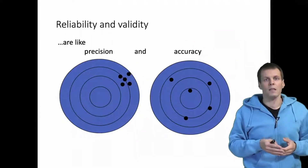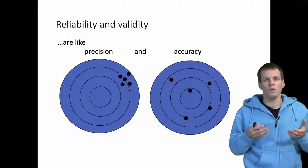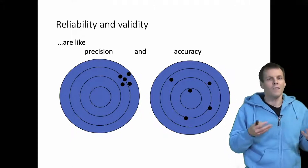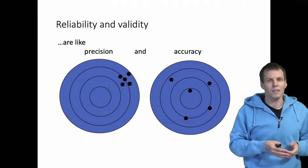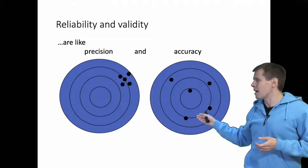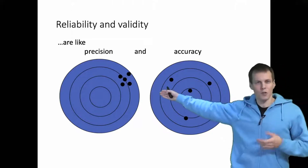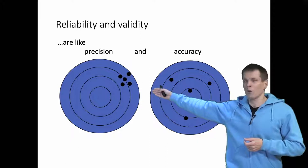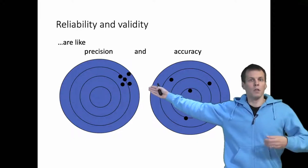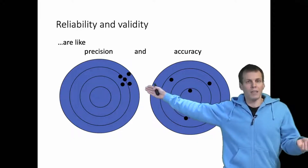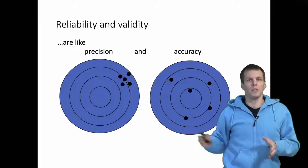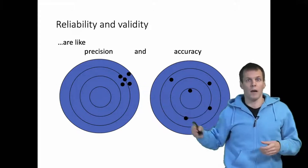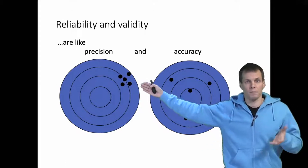Reliability and validity can also be understood as precision and accuracy. So this shooter is highly reliable, always hitting the same spot, but he's not hitting the bull's eye. So this is a good shooter, but the sights are off — it's reliable but not valid.